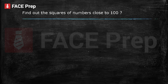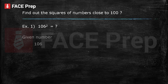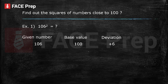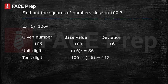Second category: find out the squares of numbers close to 100. Let's take an example: find out the square of 106. The base value is clearly 100. The deviation is 106 minus 100, which gives us plus 6. The unit digit is the square of the deviation: 6 squared is 36. The tens digit is the given number plus the deviation: 106 plus 6 gives us 112. The final answer is 11236.